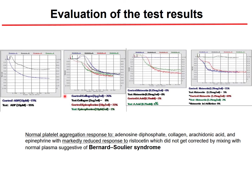In another patient, ADP, collagen, and epinephrine aggregation are normal, but there is a problem with ristocetin aggregation — a decrease that is not corrected by mixing with normal plasma. This pattern suggests Bernard-Soulier syndrome, where the surface-activating pathway is affected. Mixing with normal plasma is done to distinguish whether antibodies are present that could inhibit aggregation.